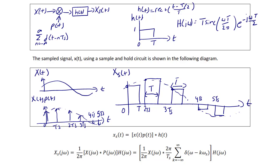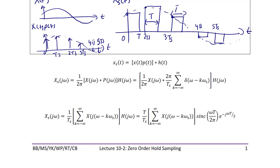The Fourier transform of XS(t) is XS(jω), which equals (1/2π) times X(jω) convolved with P(jω), multiplied by H(jω). Substituting, we get (1/2π) times X(jω) convolved with (2π/TS) times the summation from K equals negative infinity to infinity of delta(ω minus K·ωS), all times H(jω).